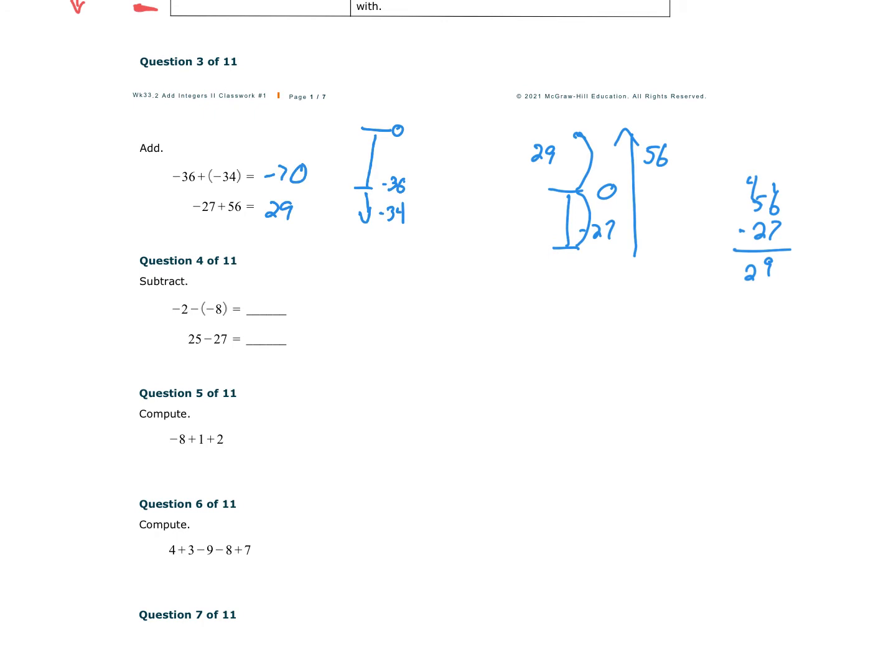Question 4, subtract. So we're at negative 2 to start, and then minus negative 8. Minus a negative is the same as addition. Remember, any time we see two negatives together, we add. So we're going up 8. So we're going up 2, and then we're going up another 6 for a total of positive 6.